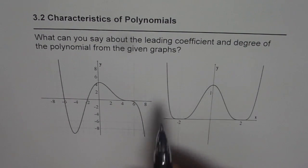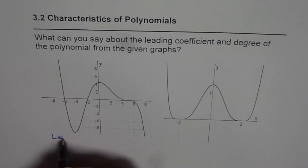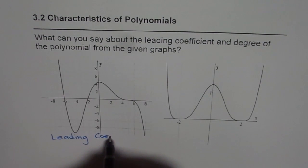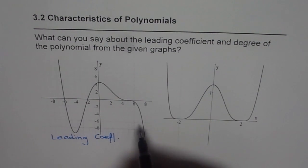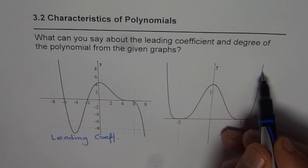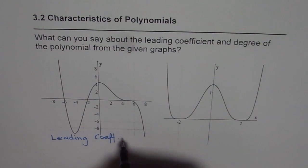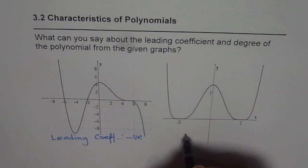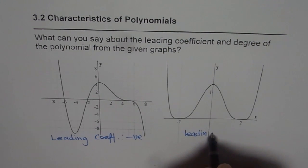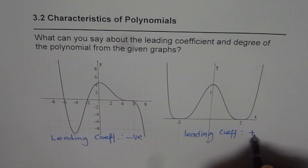Let us first talk about leading coefficient. Now to get the leading coefficient, what should we see? So let me tell you how to find whether the leading coefficient is positive or negative. We have to see the right side of the graph. If right side is up, leading coefficient is positive. If right side is down, leading coefficient is negative. So in this case it is negative and in this case leading coefficient is positive. Since right side is up, leading coefficient is positive in this case.